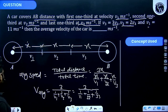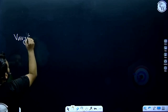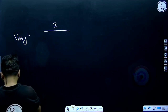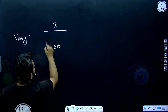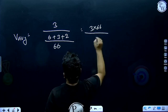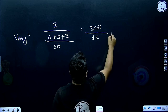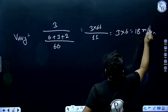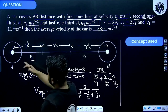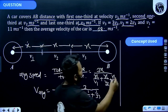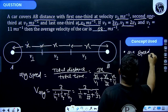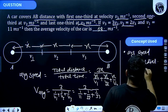Let's calculate: average speed equals 3 divided by (1/11 + 1/22 + 1/33). Taking LCM as 66, we get 6/66 + 3/66 + 2/66 equals 11/66. So average speed equals 3 divided by (11/66) equals 3 times 66/11 equals 18 meters per second. The answer is 18 meters per second. The concept used here is average speed equals total distance divided by total time.